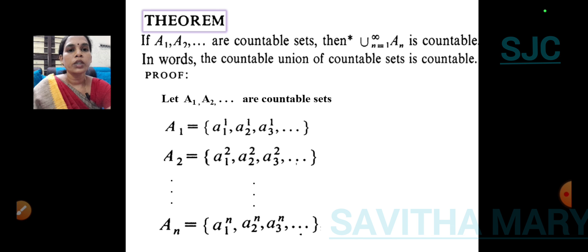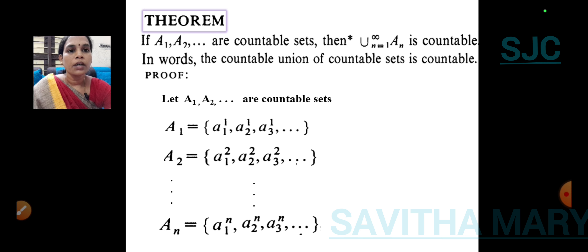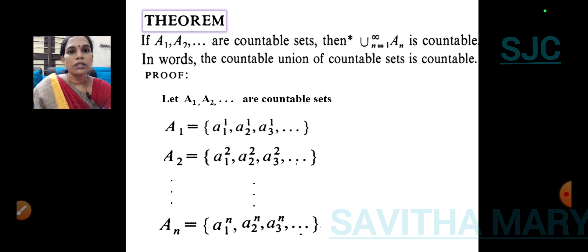The set A2 is the second set. Its elements are A1 superscript 2, A2 superscript 2, A3 superscript 2. The superscripts are 2 because every element lies in the second set. Likewise, we identify the elements of the nth set as A1 superscript n, A2 superscript n, A3 superscript n, where n represents the nth set of the given countable sets.